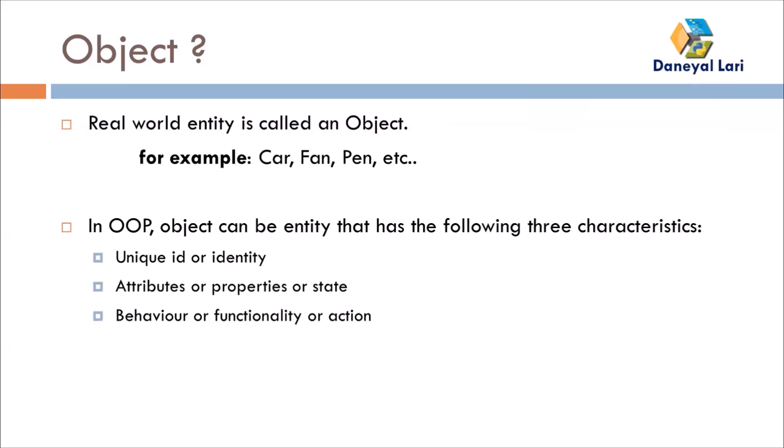Remember these three points because they are very important — if you understand them, you will have no problem writing the code. Every object in object-oriented programming has three characteristics. The first is a unique identity. Identity is how you identify a particular object. For example, if you see many cars around you, you identify each car by its number, since every car may look the same. Every object has a unique identity by which you can identify it.